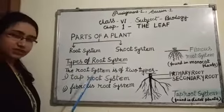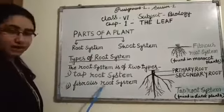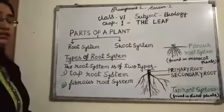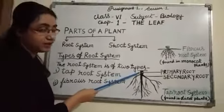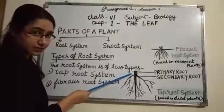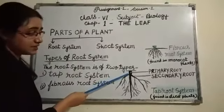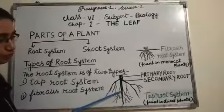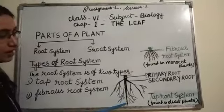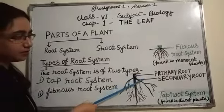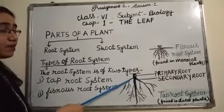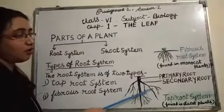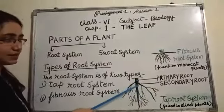Tap root system and fibrous root system. First, observe the diagram of tap root system. The tap root system has a thick main root called primary root. Primary root produces branches called secondary roots.